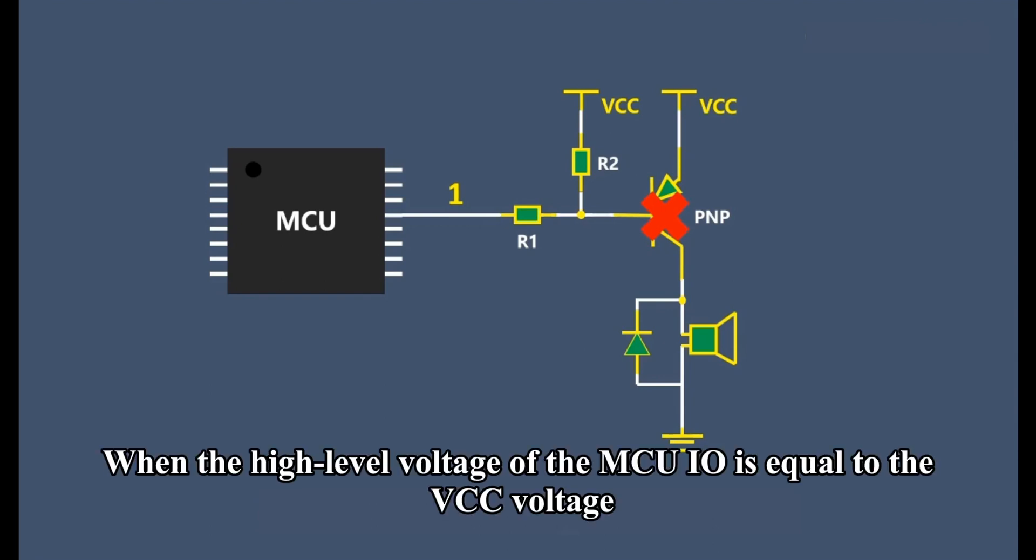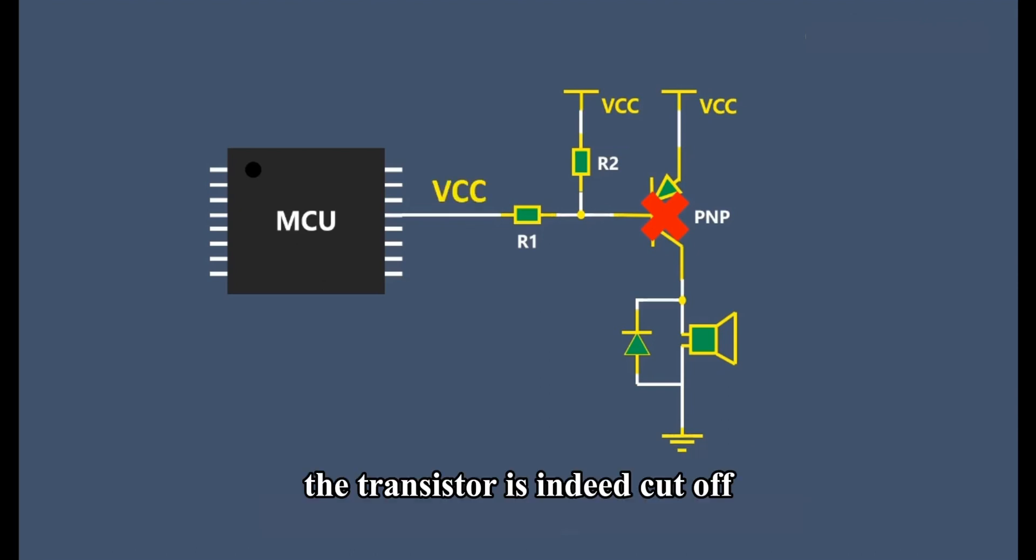When the high level voltage of the MCU IO is equal to the VCC voltage, the transistor is indeed cut off.